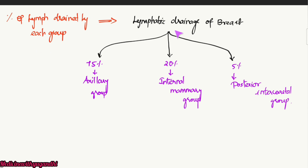Now for the percentage of lymph drained by each group of lymph nodes: about 75% of the lymph from the breast is drained by the axillary group of lymph nodes, which includes the subgroups — anterior axillary, posterior axillary, lateral, central, and apical. 20% is drained by the internal mammary group, and 5% is drained by the posterior intercostal group.